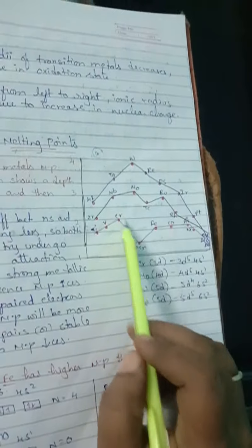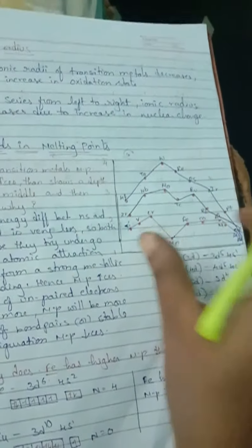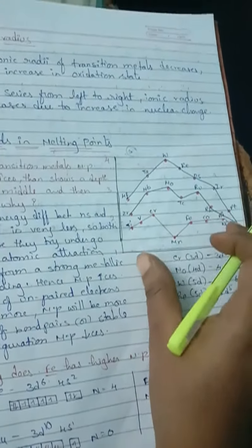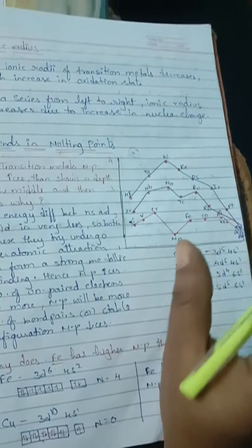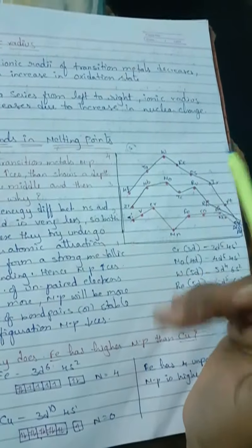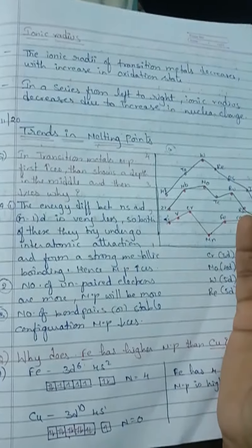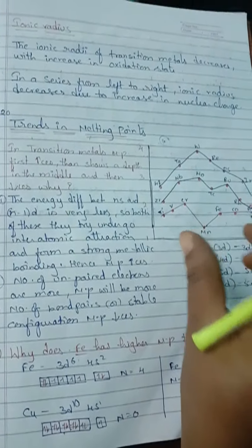Chromium has a stable electronic configuration, whereas iron has more unpaired electrons. That means iron will have a higher melting point. This is how you explain the trends followed by the 3D, 4D, and 5D series in their melting points.